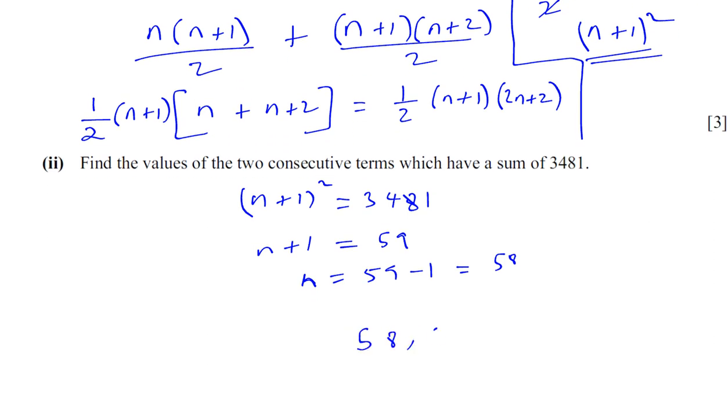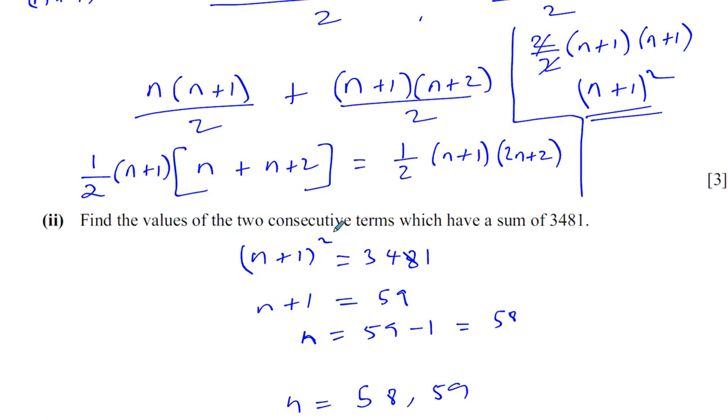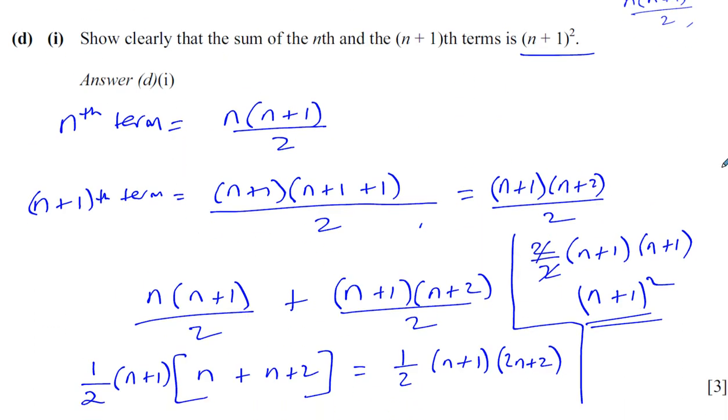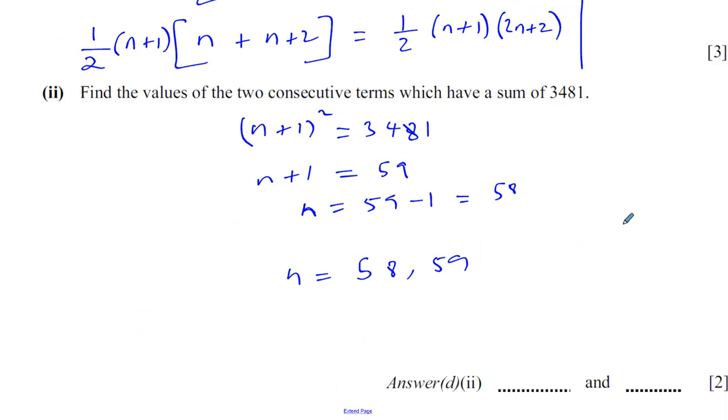That's, find the values of the 2 consecutive terms. So, that's not the term. That's the value of n. So, we want to find the values of the consecutive terms. So, we have to now put that back into our original formula, which is n times n+1 divided by 2. When n equals 58, you have 58 times 59 over 2. 58 times 59 over 2. The formula was n times n+1 over 2. That was our formula.